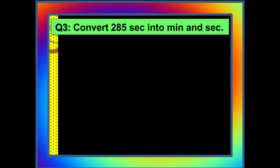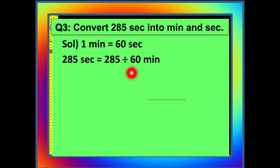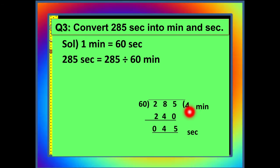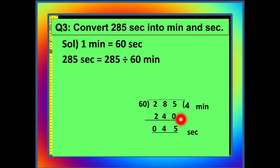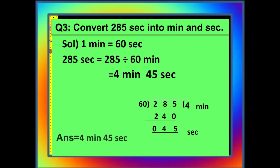Now we are going to convert 285 seconds into minutes and seconds. We know that one minute has 60 seconds in it. So 285 divided by 60 gives us 4 as our quotient and 45 as our remainder. The quotient represents the bigger unit, minutes, and the remainder represents the smaller unit, seconds. So our answer is 4 minutes and 45 seconds.